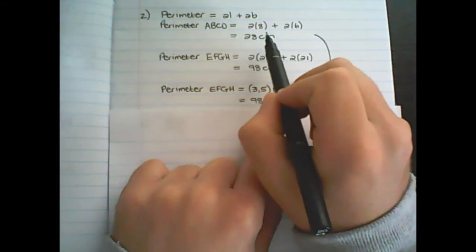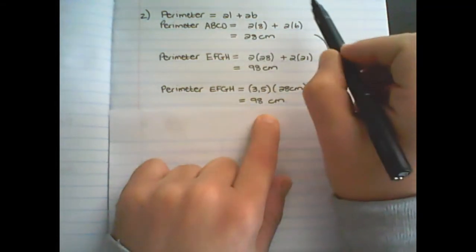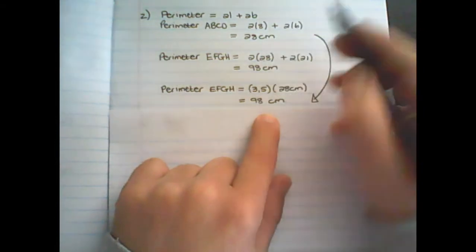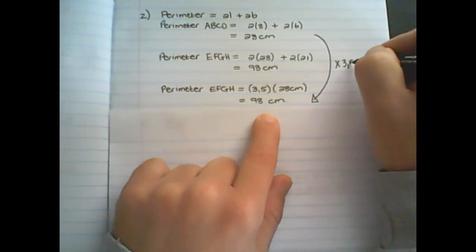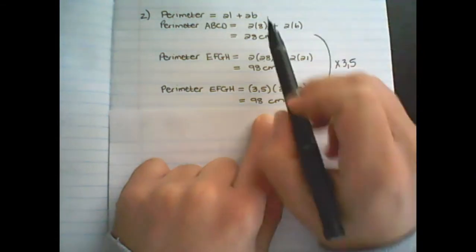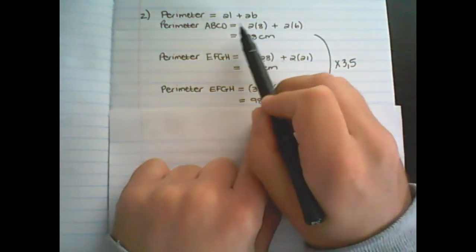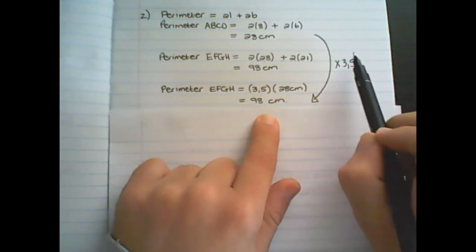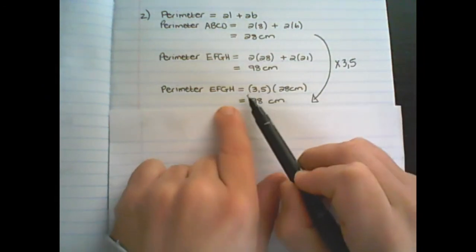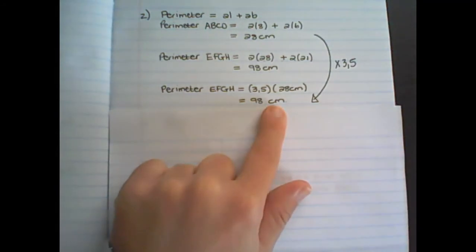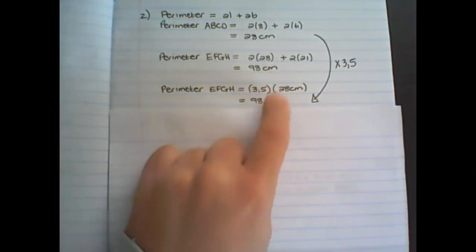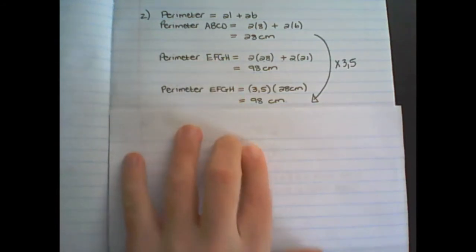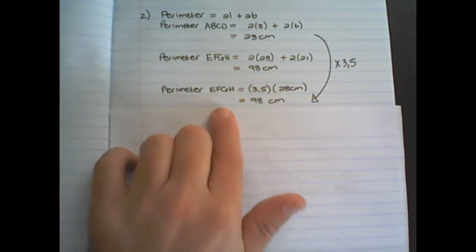But I could have found the new perimeter of the enlarged figure directly by only using the original distance. In the previous question we found that the enlargement factor is 3.5. So if I take the original perimeter and multiply it by 3.5, I would find that the perimeter of the new diagram is 98 centimeters. So there are two ways to find the perimeter of the enlarged diagram.